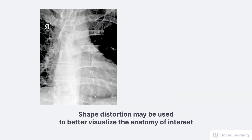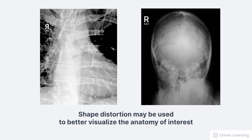Shape distortion is sometimes used to better visualize the anatomy of interest. For example, radiographs taken of the sternum at an oblique angle will distort some of the anatomy, but will show joint space better and prevent superimposition of the spine. Another example is the Towne's view of the skull, where the x-ray tube is intentionally angled 30 degrees, which can help with identifying skull fractures.